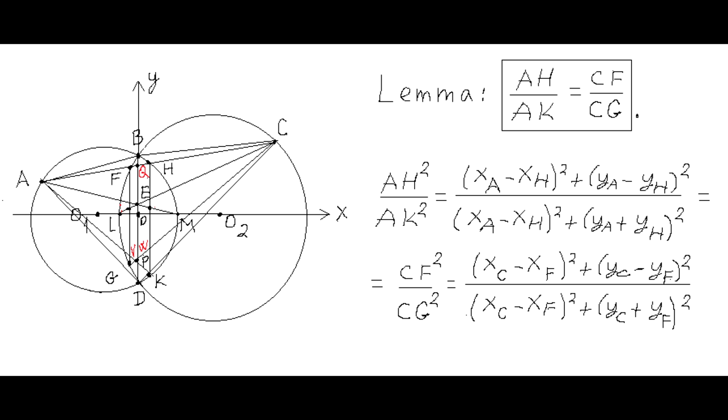And by the construction of this configuration, the X coordinate of point K is the same as X coordinate of point H, and the Y coordinate of point K is minus Y coordinate of point H, and analogously, the X coordinate of point G is the same as X coordinate of point F, and the Y coordinate of point G is minus Y coordinate of point F.